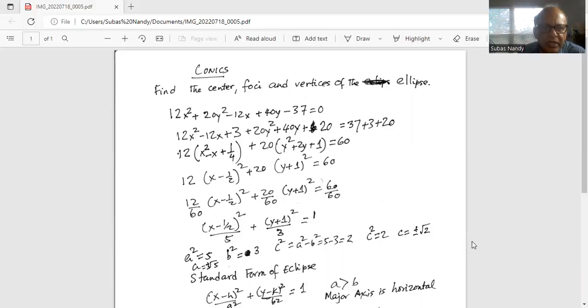Okay, so what do I have? 12. This is x minus half square, the term in parentheses. Remember x minus half square is x square minus 2 times half times x, which is minus x and plus one fourth. That's why it is x minus half whole square.